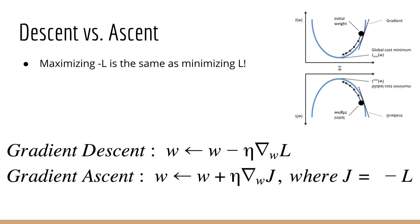One common point of confusion among students is the difference between gradient descent and gradient ascent. Sometimes it's more convenient to use one or the other, but it's important to realize that they are exactly the same and yield the same answer. For example, if I have some loss L that I want to minimize, then it's possible for me to define some objective J that I want to maximize, which is just the negative of L. To maximize J, I can do gradient ascent rather than gradient descent, but both will give me the exact same answer.